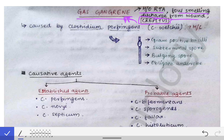The most common causative agent of gas gangrene — although gas gangrene is a multi-bacterial or multi-pathogenic condition, meaning a single bacteria cannot cause it alone; multiple bacteria are always involved — but the most common bacteria is Clostridium perfringens, which was initially called Clostridium welchii. Let's look at its important features.